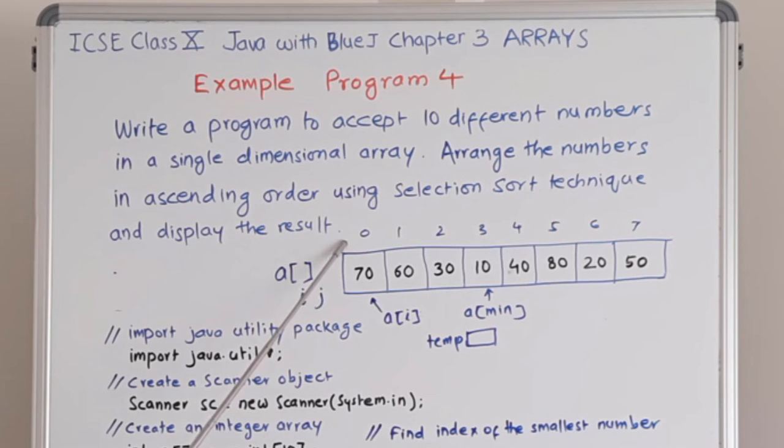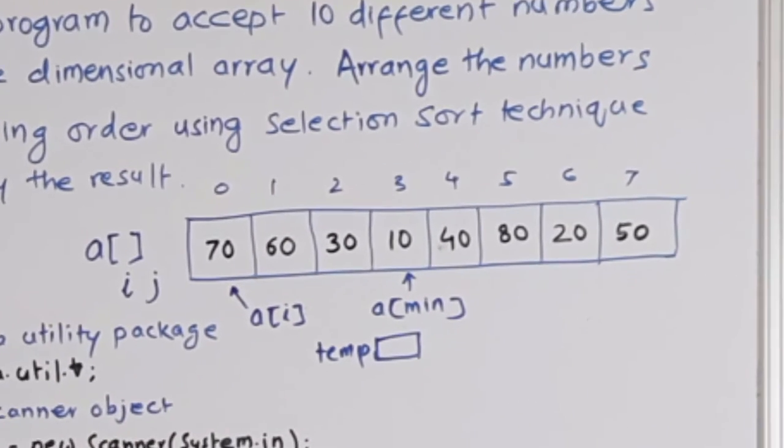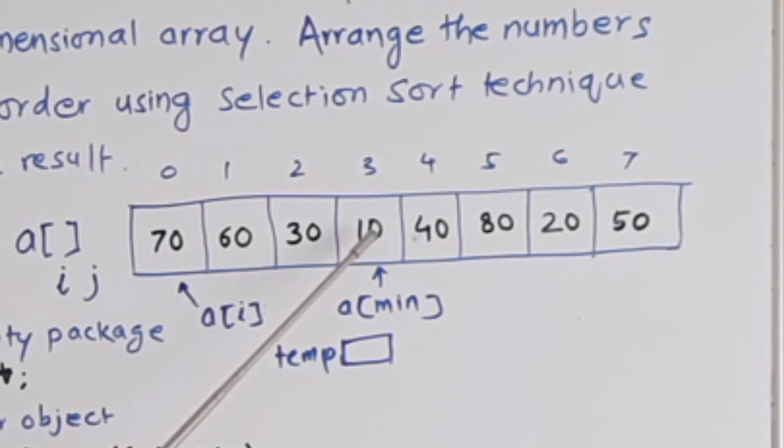We compare the first number in the array with the numbers in the rest of the cells and find out the smallest number. So in this case, first array is 0. The index number of the smallest number is 3. So we have to first find the index number of the smallest number. After that we will interchange the values of these two cells.